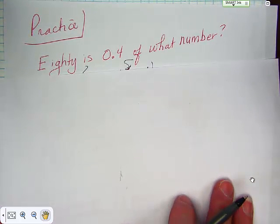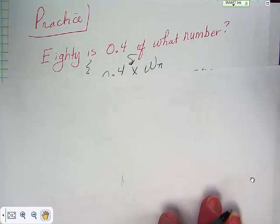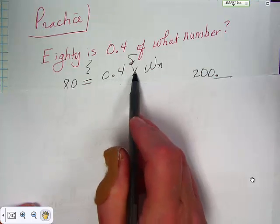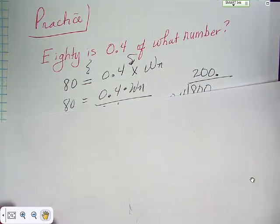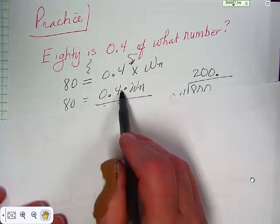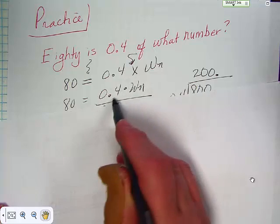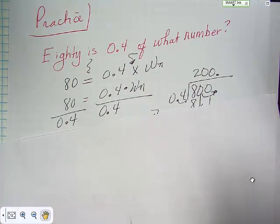80 is 0.4 of what number? 80 equals 0.4 times what number. Alright, so we've got to get rid of the 0.4, so we're going to divide by 0.4. And if we divide by 0.4 here, we have to divide by 0.4 on the right side and the left side both. Here's our work over here.